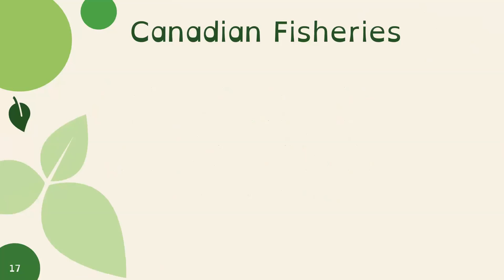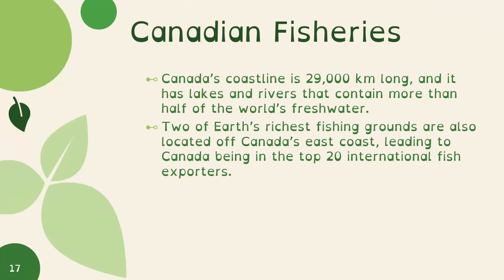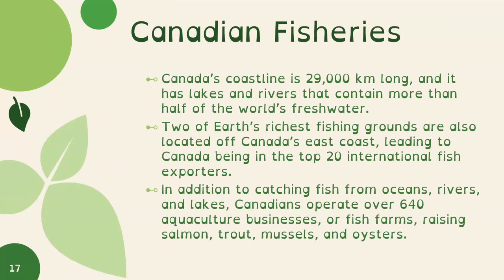We're going to look at Canadian fisheries as one example. Canada's coastline is 29,000 kilometers long and it has lakes and rivers containing more than half of the world's fresh water. Two of Earth's richest fishing grounds are located off Canada's east coast, placing Canada in the top 20 international fish exporters. Canadians also operate over 640 aquaculture businesses — fish farms — raising salmon, trout, mussels, and oysters.